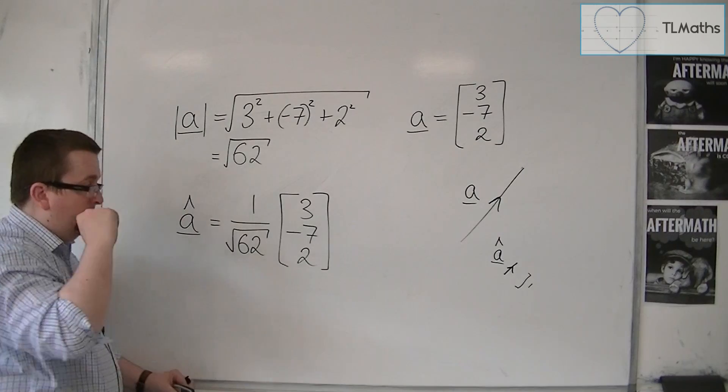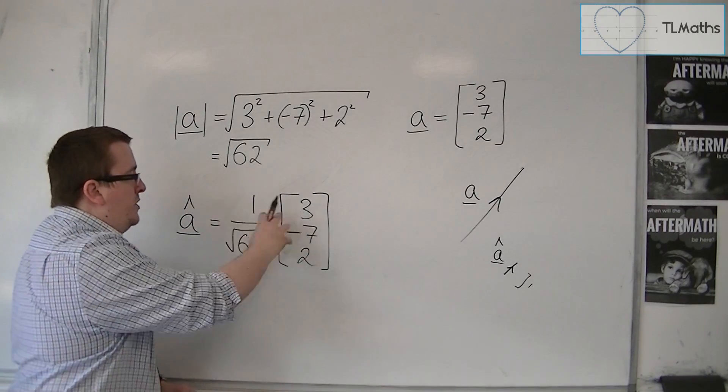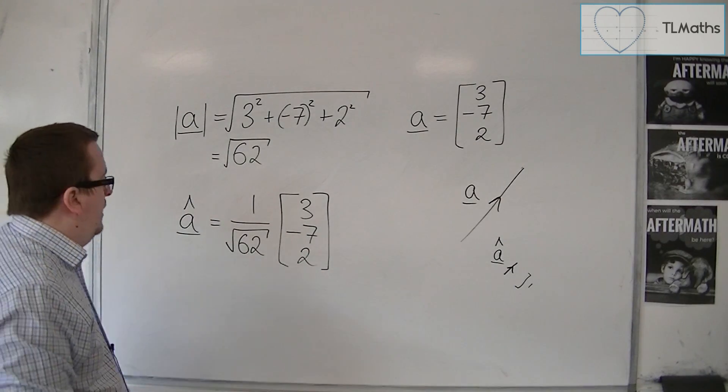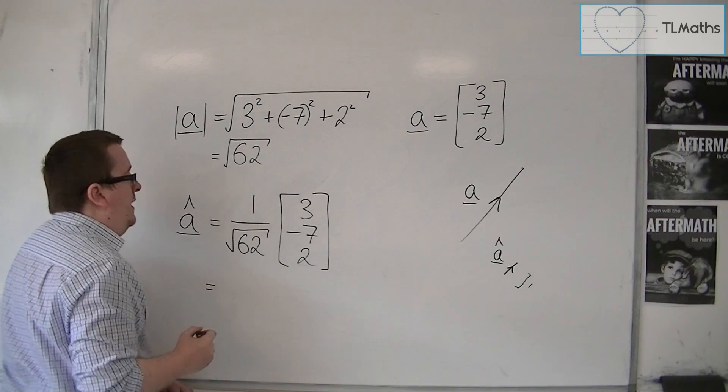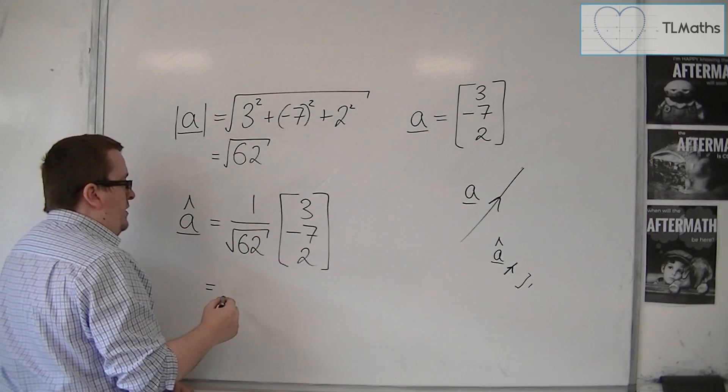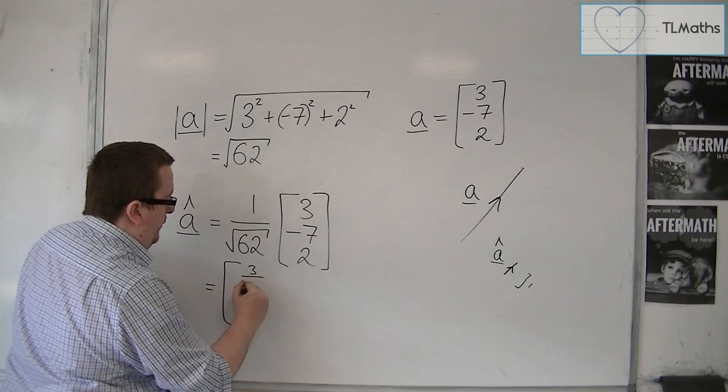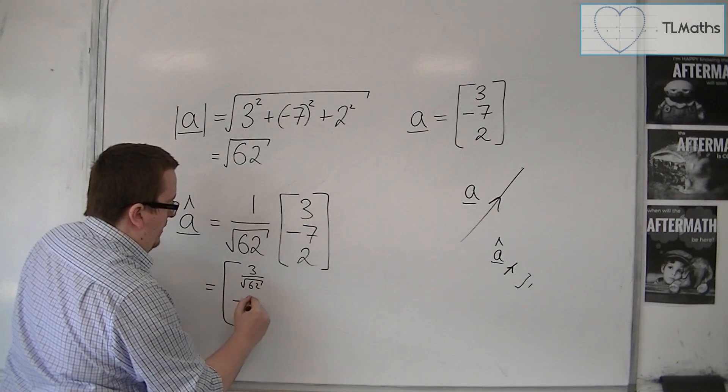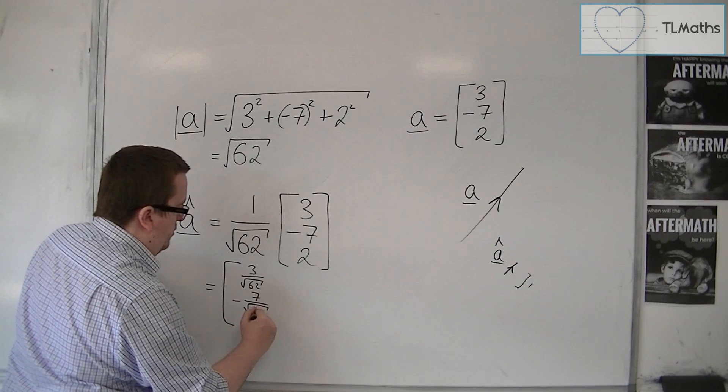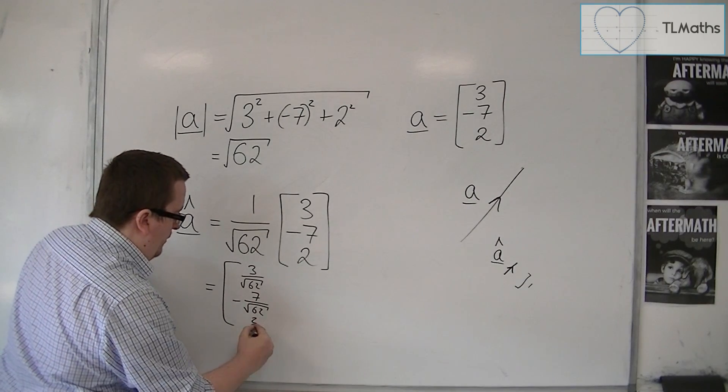So you could check this if you like. So if we put this all together, you could have 3 over root 62, minus 7 over root 62, and 2 over root 62.